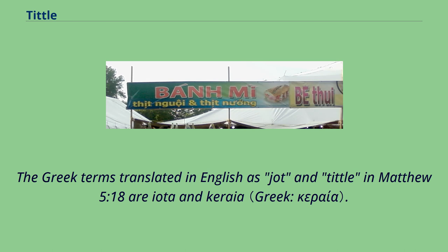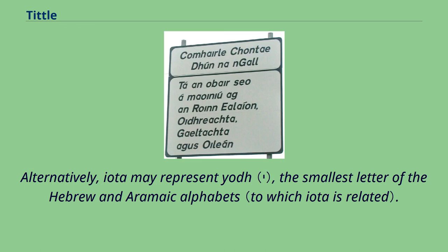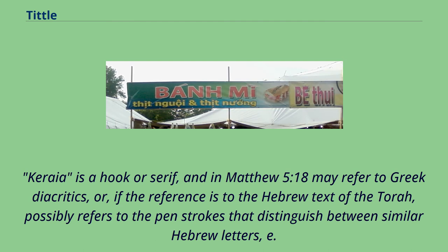The Greek terms translated in English as jot and tittle in Matthew 5:18 are iota and keraia. Iota is the smallest letter of the Greek alphabet; the even smaller iota subscript was a medieval innovation. Alternatively, iota may represent yod, the smallest letter of the Hebrew and Aramaic alphabets. Keraia is a hook or serif, and in Matthew 5:18 may refer to Greek diacritics, or if the reference is to the Hebrew text of the Torah, possibly to the pen strokes that distinguish between similar Hebrew letters.